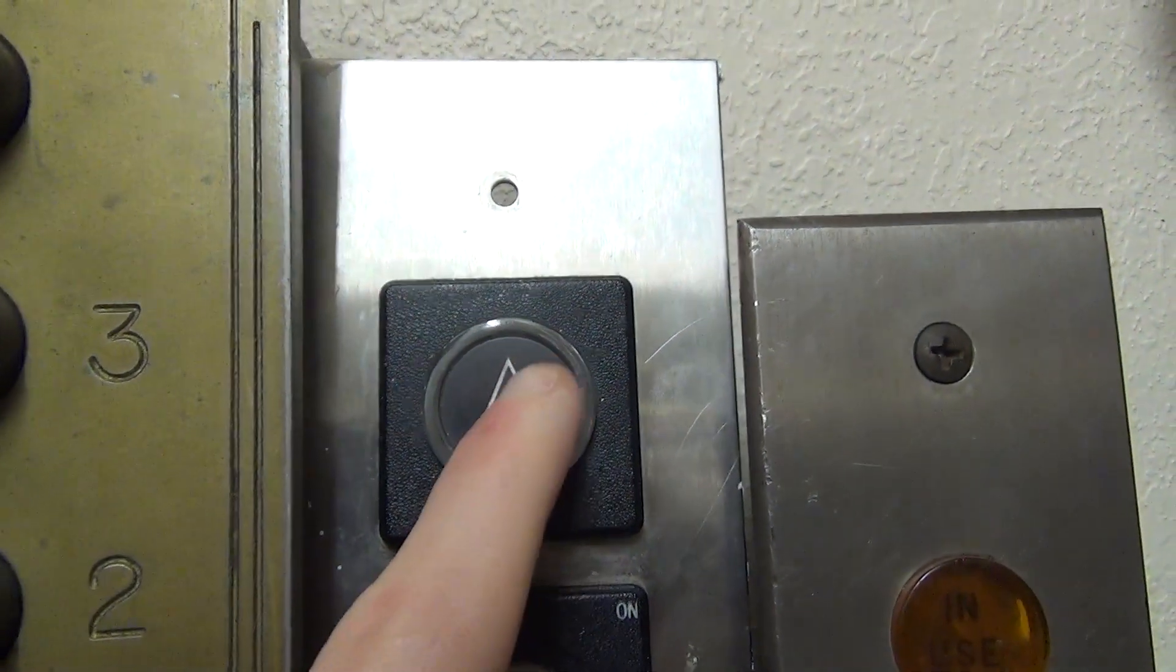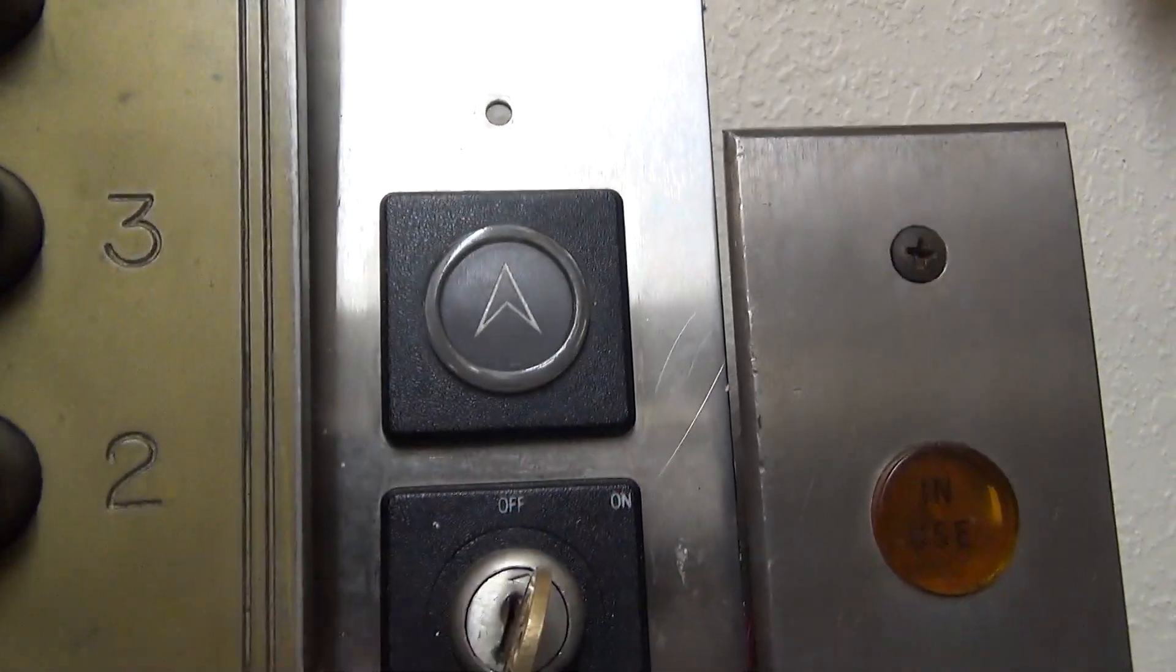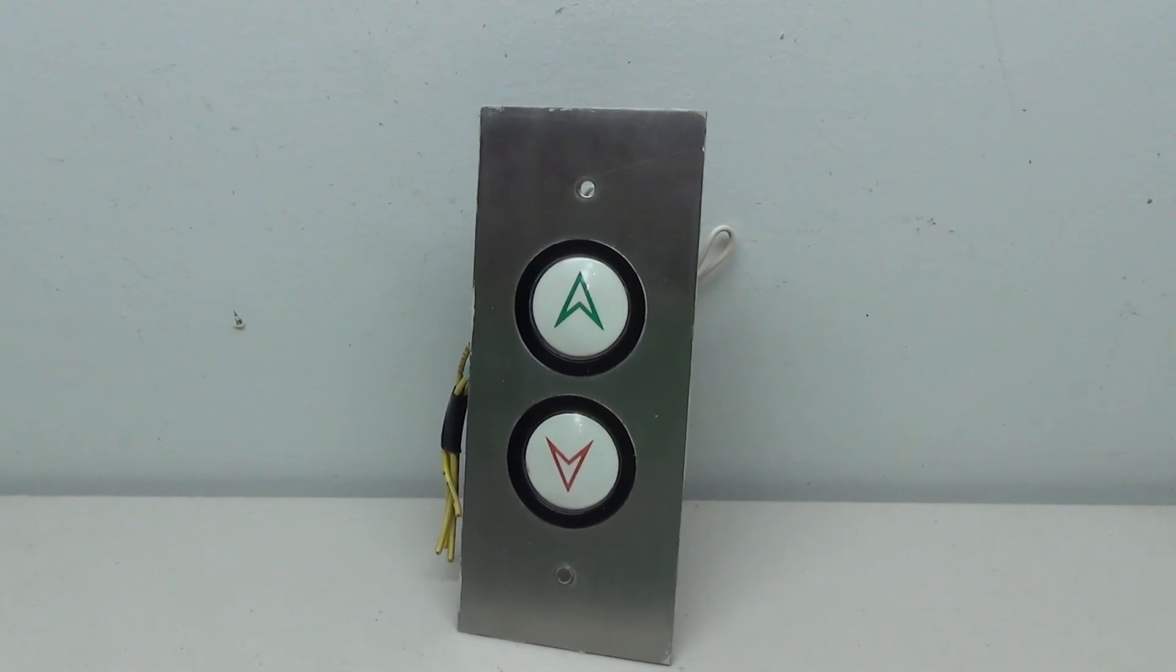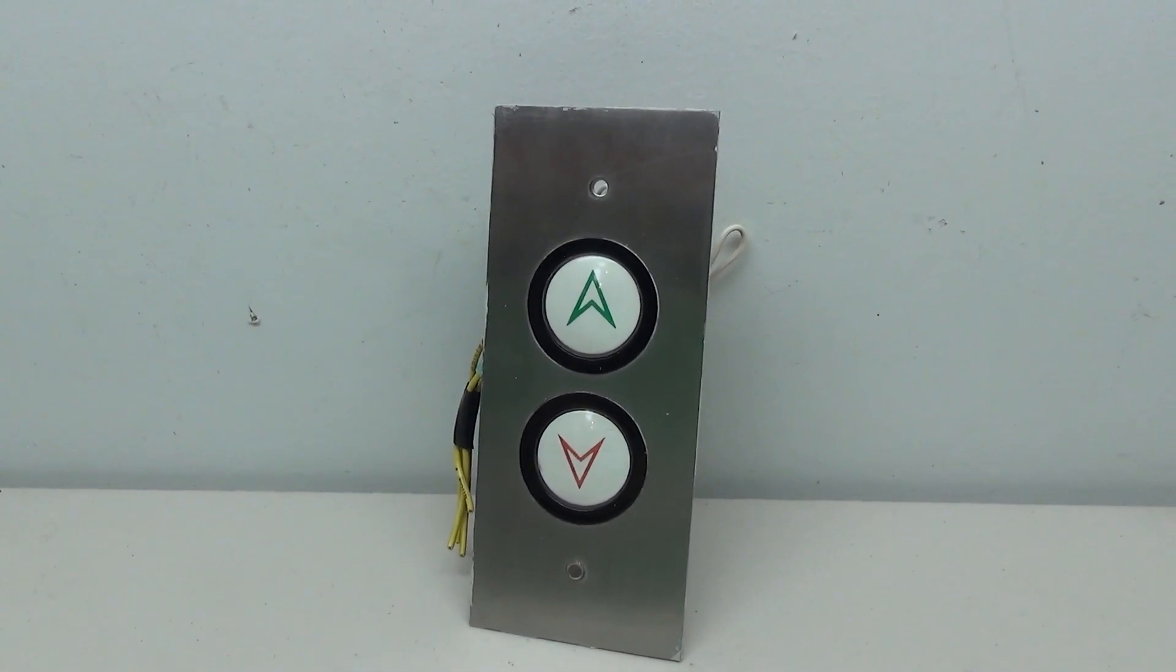And in the 90s, they use this soft touch style, which this fixture isn't wired yet. So future video. And there was a vandal resistant version of the circle button as well. So not a ton of fixture choices for US elevators. But these are quite simple to work on.